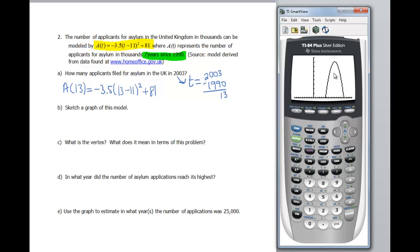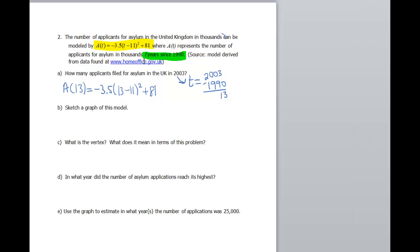So this is opening down, as we thought. It got moved right 11, and up 81. So this makes sense. Okay, but back to what we wanted to do. We wanted a value of 13. So let me go ahead and look at my table. Scroll down a wee bit here until we get to 13. And that's gonna give me a value of 67. And remember, our value is in thousands. So this is gonna be 67,000 applicants.